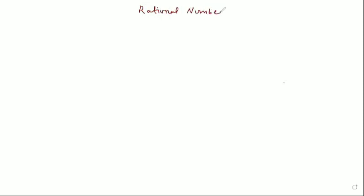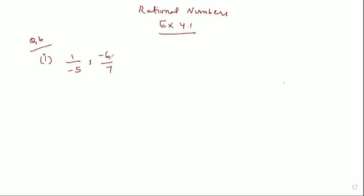Let's check out how to solve Exercise 4.1, Question Number 6. In this question, we have to tell between two rational numbers which rational number is greater. There is a procedure to find the greater rational number. If two or more rational numbers are given, first of all make sure there should not be any negative number in the denominator — so first remove the negative sign from the denominators.